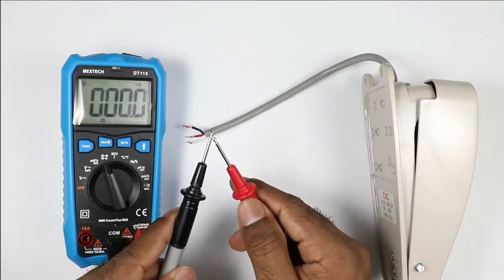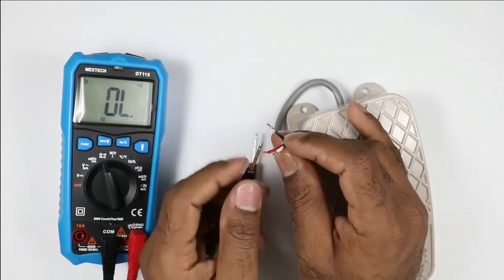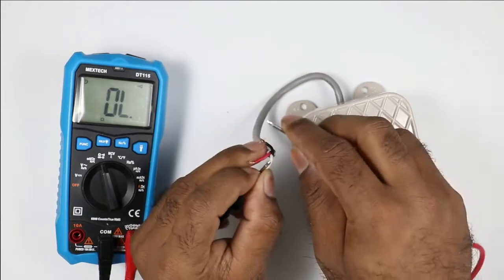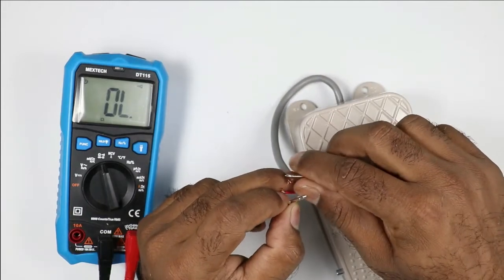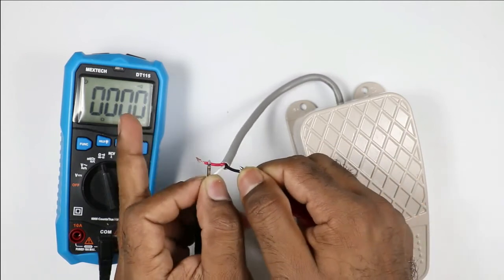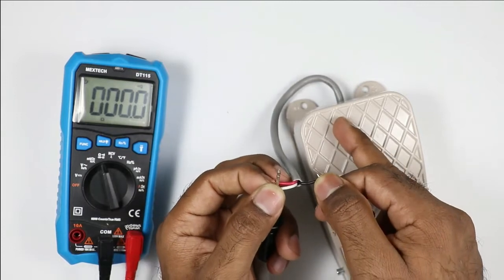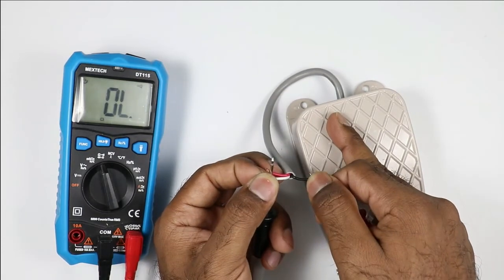To identify this, we need to use a multimeter. Connect the probe with one of the wires of the foot switch. I connected one probe with the white wire and one probe with the black wire. On connecting, you can hear the beep sound. This means that white wire and black wire is our NC contact. If I press this foot switch, you saw that the beep sound stopped.